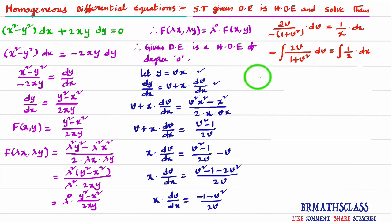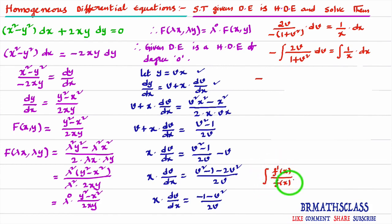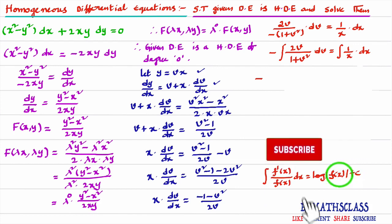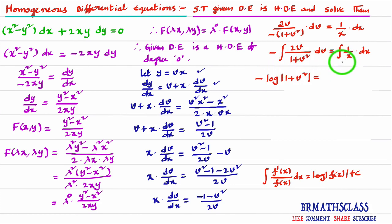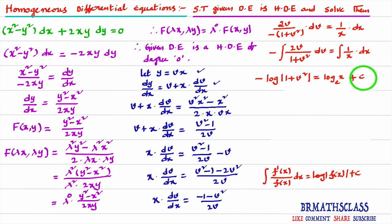Integrating both sides: −∫ 2v / (1 + v²) dv = ∫ (1/x) dx. The derivative of (1 + v²) is 2v, which appears in the numerator. Using the formula ∫ f'(x)/f(x) dx = log|f(x)| + c, we get: −log|1 + v²| = log x + c.